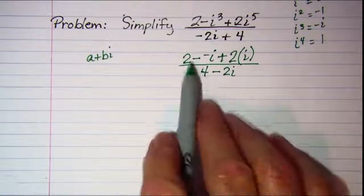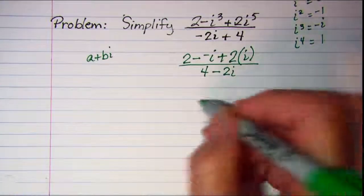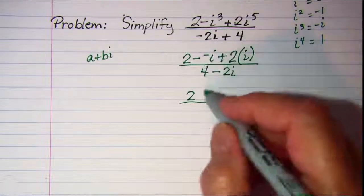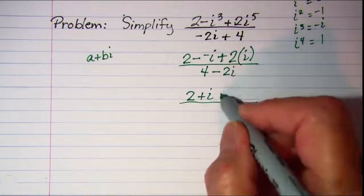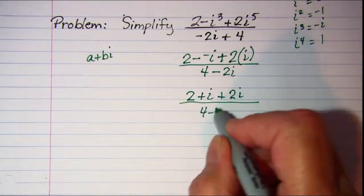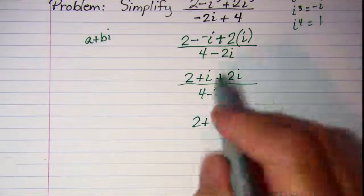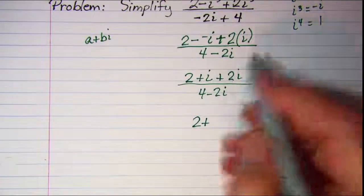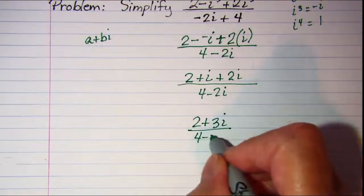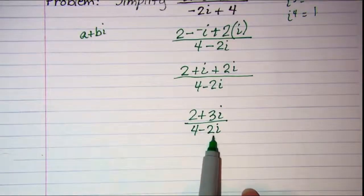Now let's do some more simplifying up here. I have 2 and then this is plus i and then this is plus 2i and then I have 4 minus 2i. So I have 2 plus 1i plus 2i is 3i divided by 4 minus 2i. Now I'm ready to rationalize the denominator.